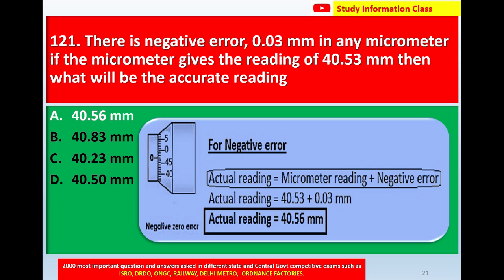For negative error, the formula is: actual reading = micrometer reading + negative error. The micrometer reading is 40.53 mm. The negative error is 0.03 mm. So, 40.53 + 0.03 = 40.56 mm. The actual reading is 40.56 mm.